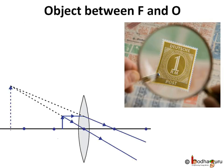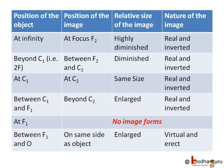That's why we hold a magnifying lens closer to the object to get a magnified virtual image. So this is how the table looks for the convex lens depending upon where the object is. That's all for now, bye bye!